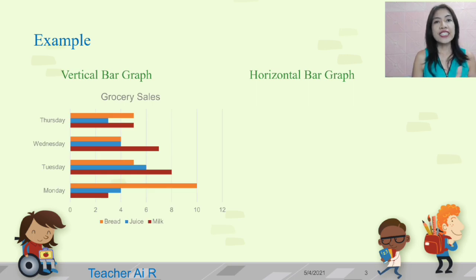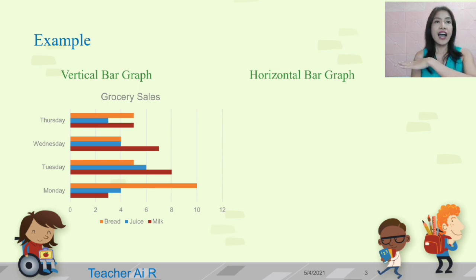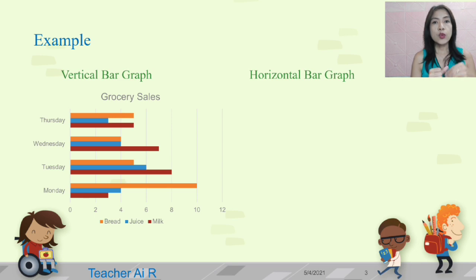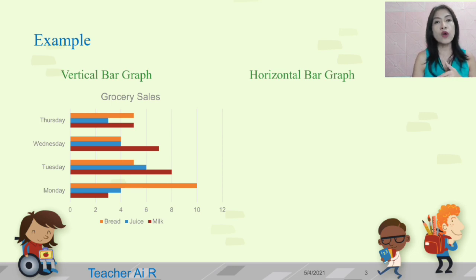Here is the example of a vertical bar graph. In that graph, you also have to see the legend. We have there the orange as the bread, the blue as juice, and the maroon as milk.